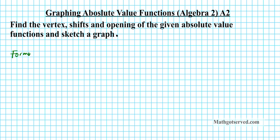One formula that can guide our determination of the properties and also guide our construction of the graph. The general form of the equation of an absolute value function is given by y equals a times the absolute value of x minus h, plus k.